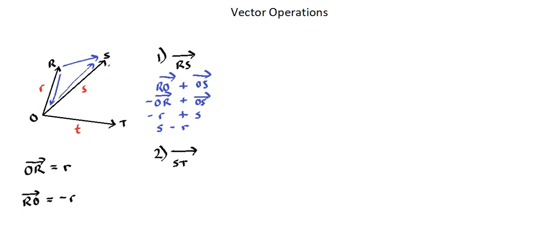Vector ST is a vector starting at S and ending at T. And the process to get there is beginning at S going to O and from O going to T. So it's the addition of vector SO and vector OT. And again looking at our diagram we don't have vector SO. We do have vector OS. So let's show this as a subtraction of the opposite direction, minus OS. We do have OT diagrammed. So we'll add OT.